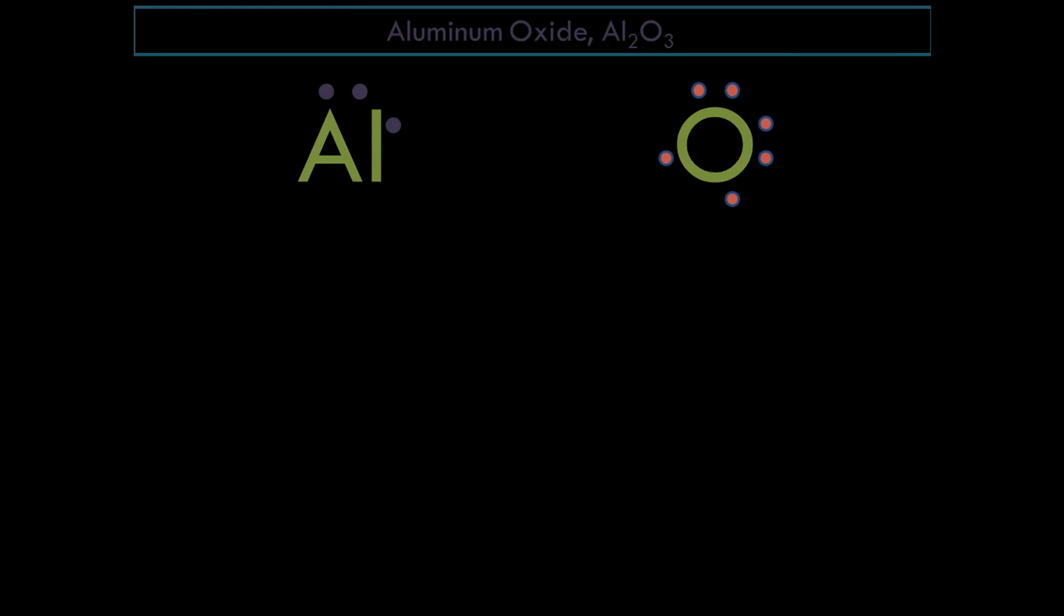Given only the information that aluminum and oxygen will bond together, how are we going to verify that it has that chemical formula? Given aluminum and oxygen only, determine what is going to be the chemical formula for this ionic compound. Suppose you don't know that it is Al subscript 2, oxygen subscript 3.